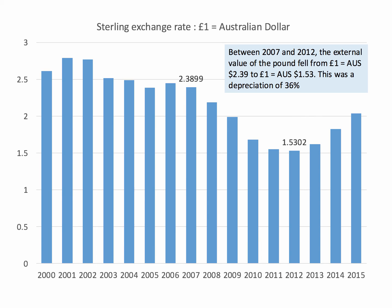So if you get a chart like this, instead of just describing the change — for example, falling from $2.39 to $1.53 — get the calculator out and put in a simple percentage change. You could say the external value of the pound fell or depreciated from $2.39 to $1.53; this was a depreciation of 36%. Just making the percentage calculation gives the examiner an indication of the scale of the change — and the 36% depreciation was quite a big change over a six-year period.